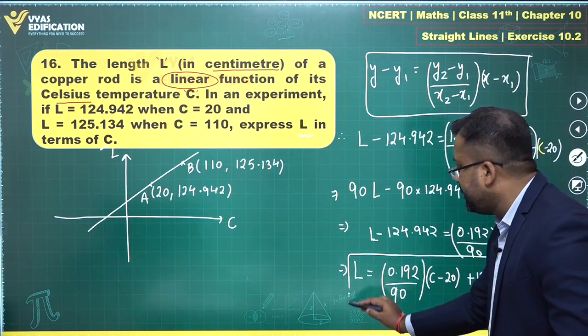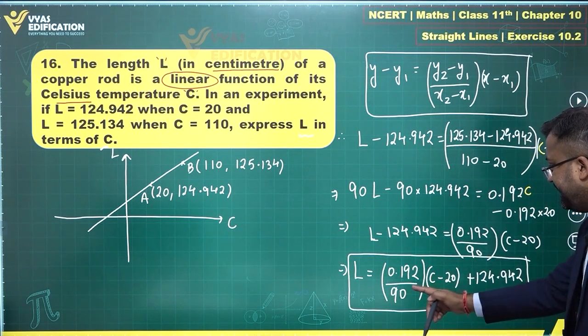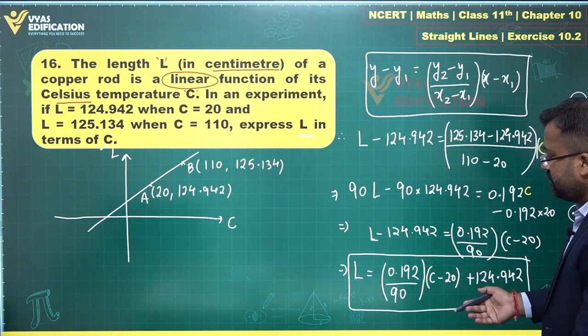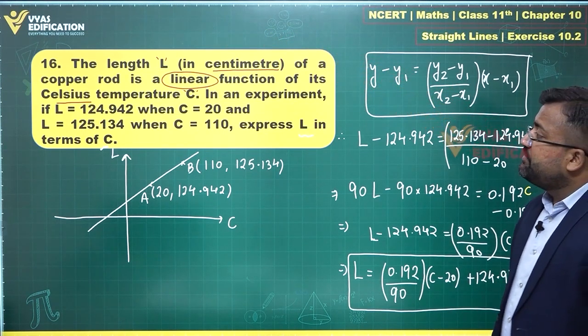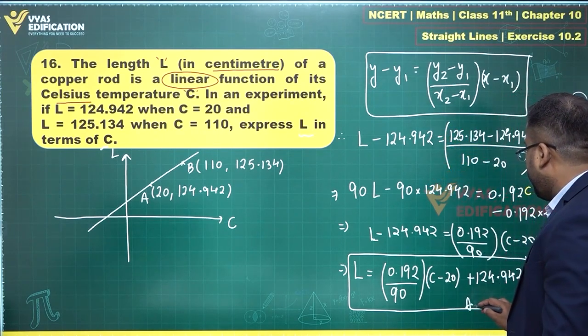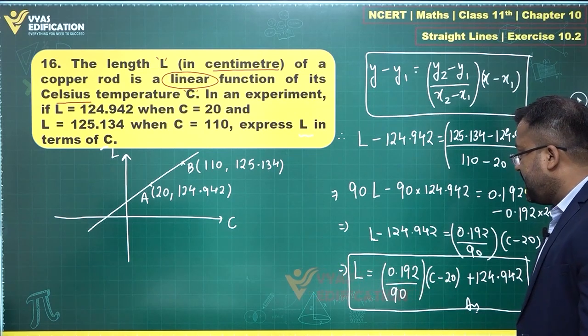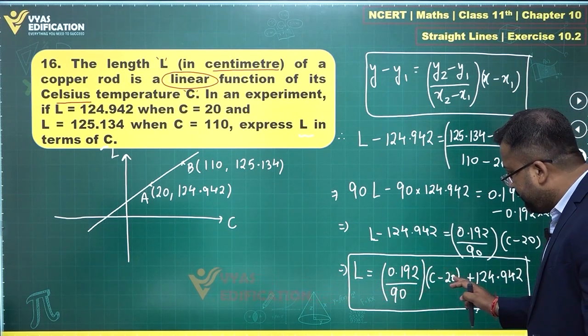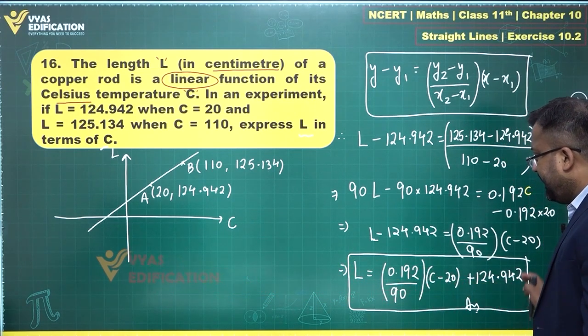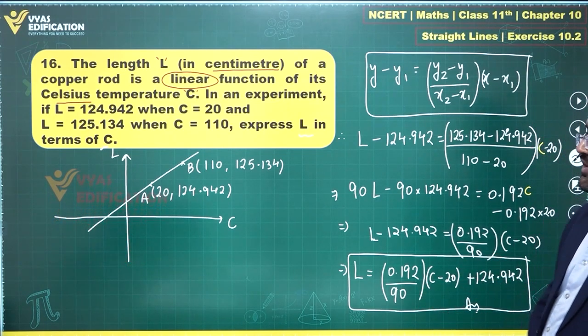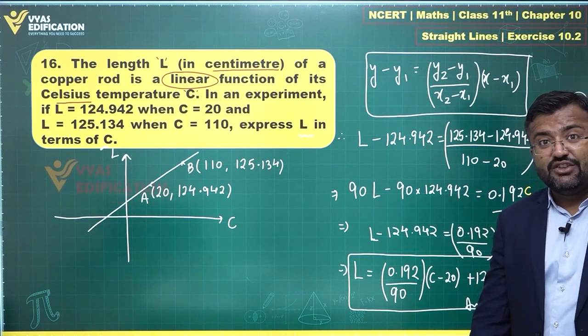You do not need a relation in X and Y. You need L in terms of C and this is the value that I am getting. This is what I will be having. Express L in terms of C—this is what we have. Although we can simplify it further by multiplying 0.192 upon 90 to C and multiplying this with 20 and maybe dealing with this one over here, but we can leave the answer at this stage as well. That's the complete solution of this 16th question in front of us.